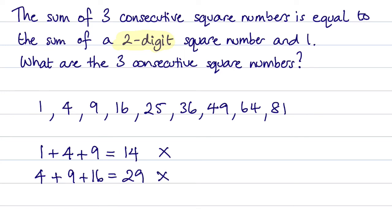The next one to try is 9 plus 16 plus 25. That would give me a total of 50. And 50 indeed does equal a square number plus 1. It's equal to 49 plus 1.